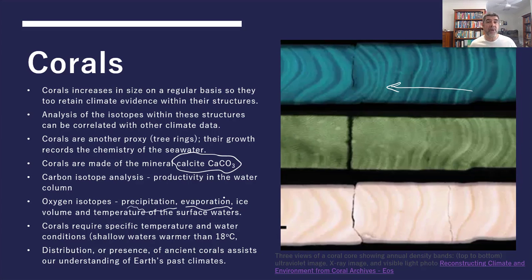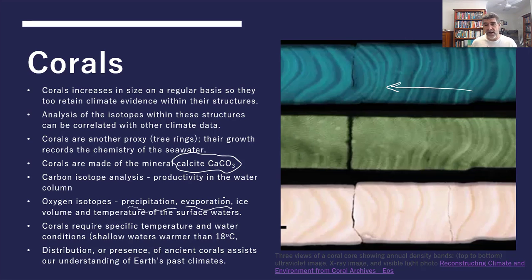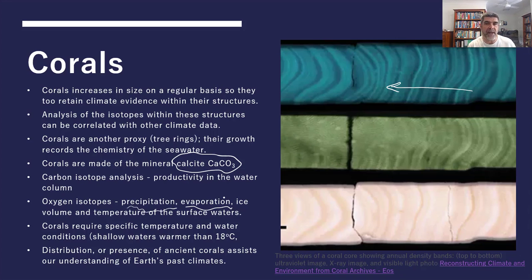Corals are found in tropical, shallow, warm waters, which tells us about their preferred climate conditions. By looking at the distribution and presence of ancient corals, we can infer that wherever corals existed, the climate must have been sufficient — shallow and relatively warm — to support their growth, death, and preservation.